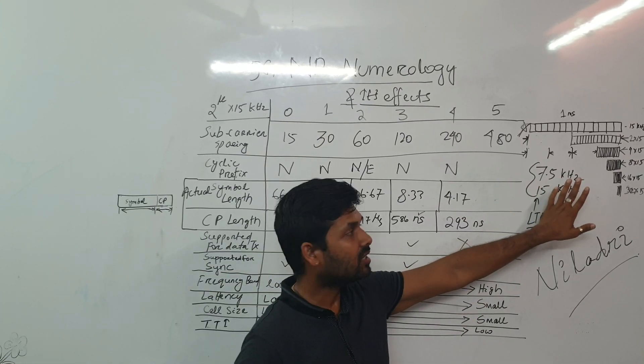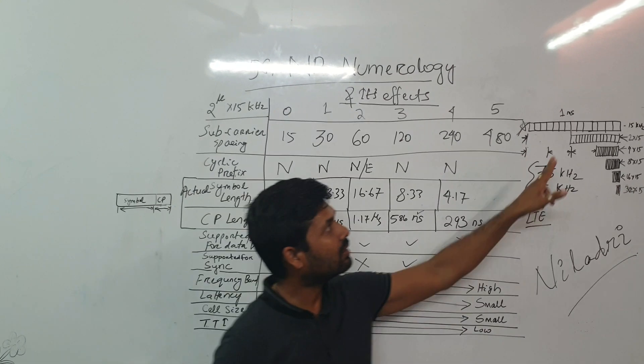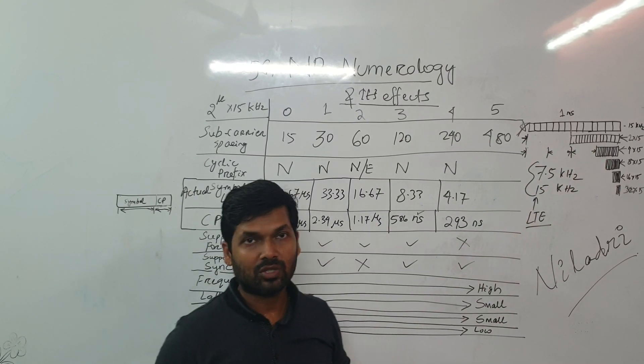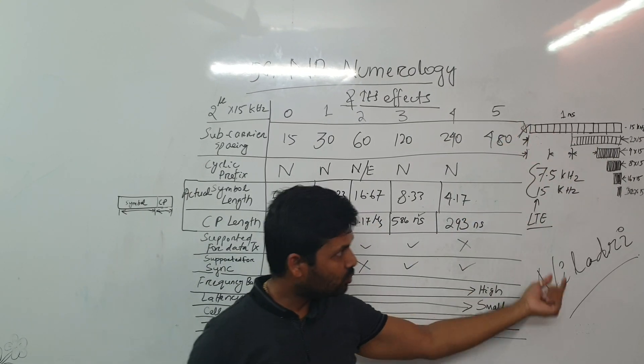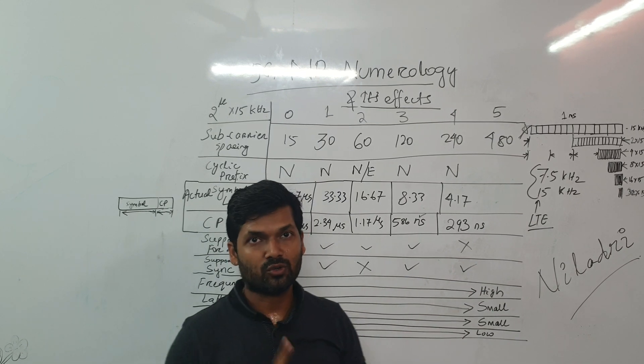But we are discussing about NR. In NR it's a bit different. We don't have two different subcarriers. We have one symbol and 12 subcarrier is considered as one resource block.